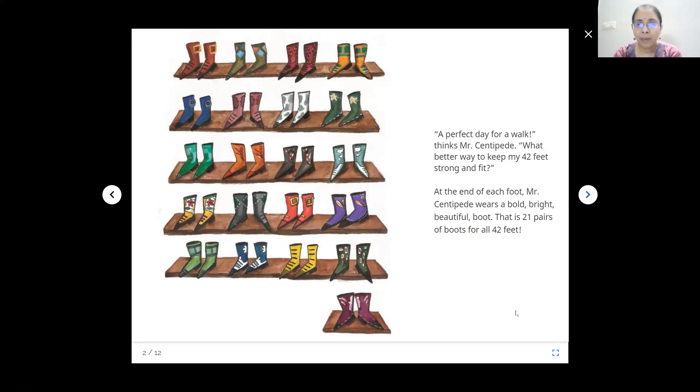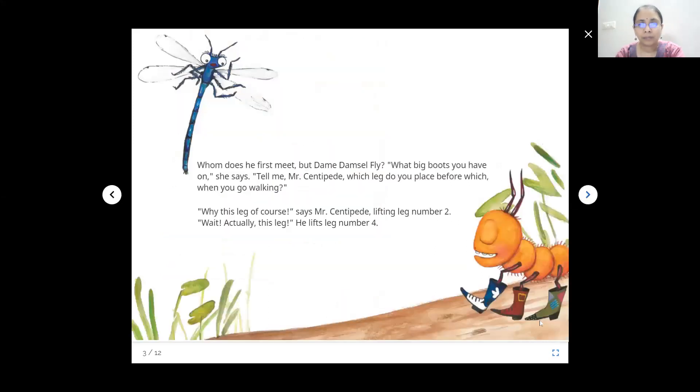That is 21 pairs of boots for all 42 feet. Oh, that's a lot of feet and a lot of boot for them. Whom does he first meet? Dame Demsel Fly. What big boots you have on, she says. Tell me, Mr. Centipede, which leg do you place before which while you go walking?